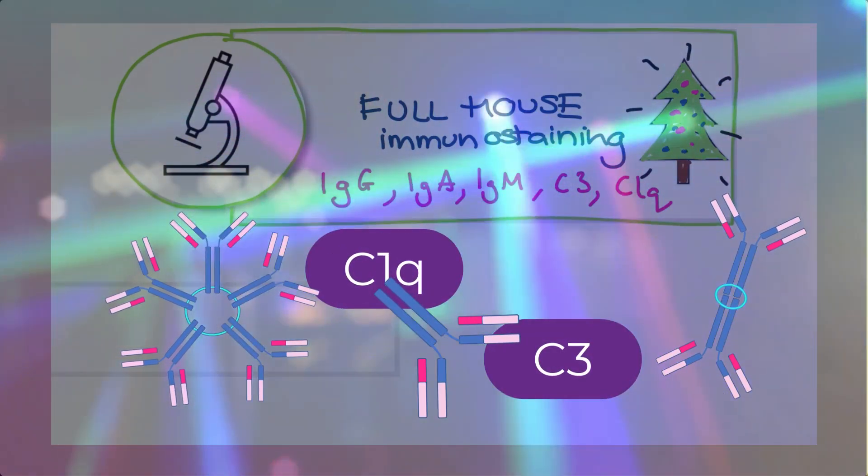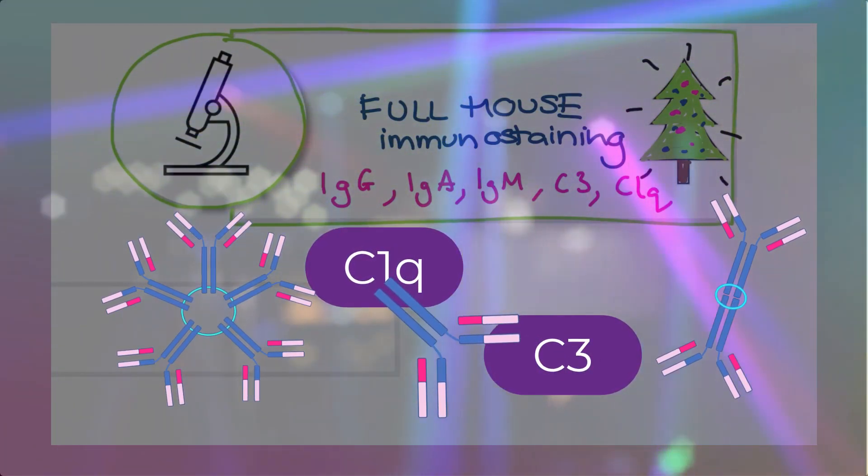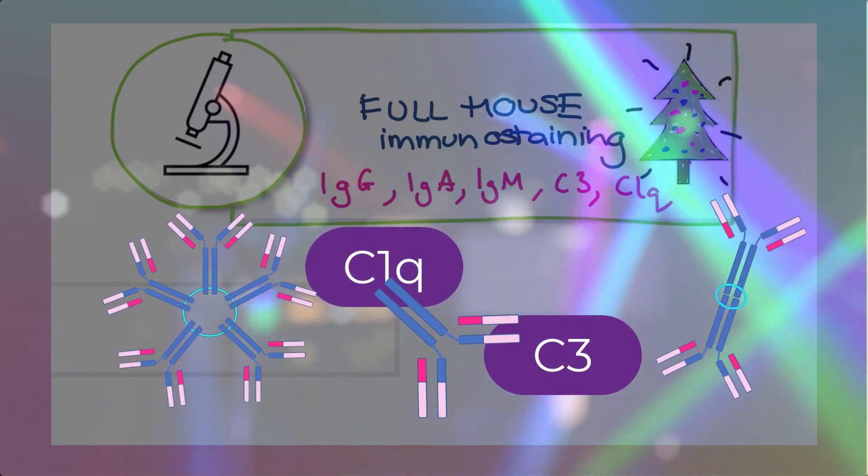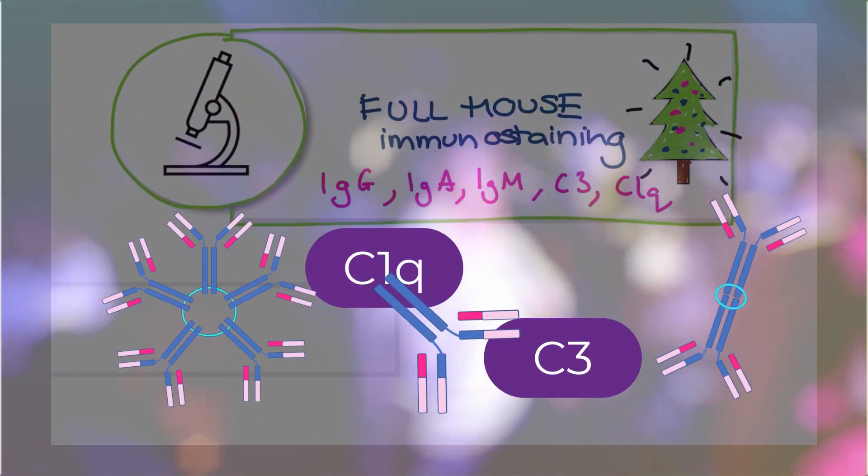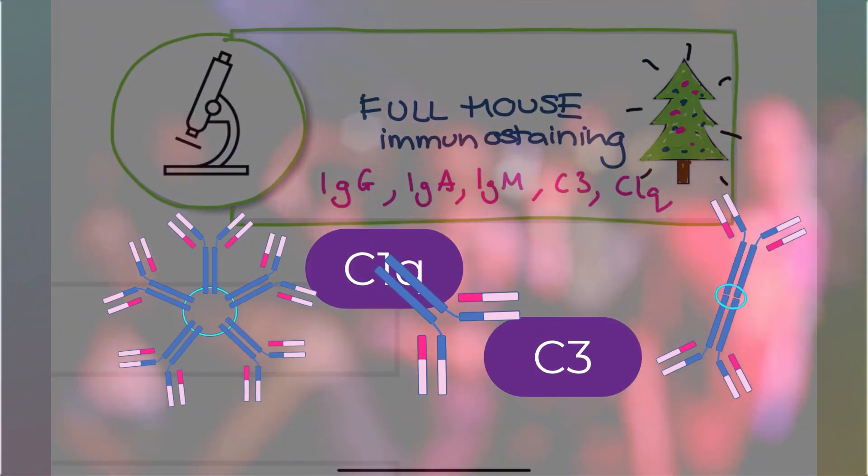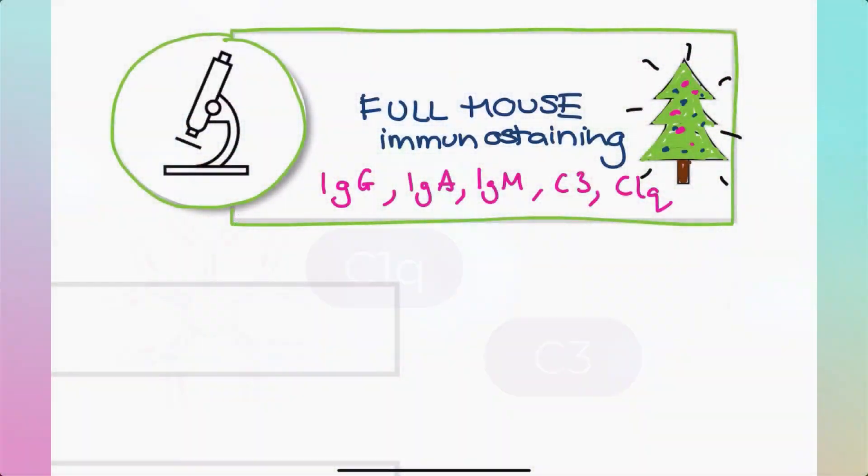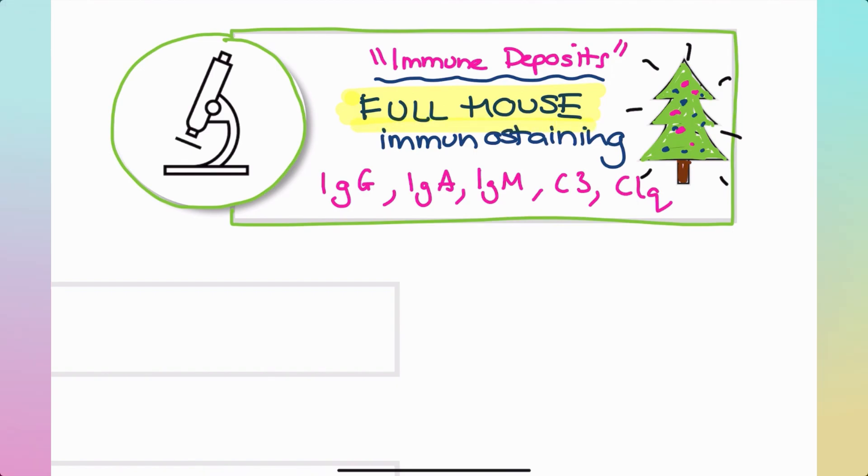Full house staining can also occur in other situations like infections for example, but in that sense the clinical picture is going to help you delineate between those scenarios. Regardless, it is important to know that lupus nephritis is associated with full house staining with a range of antibodies and complement and all the things. So from now on we're going to call this collection of antibodies and complement immune deposits. Whenever I say immune deposits, all I'm saying is antibodies and or complement are having a party.